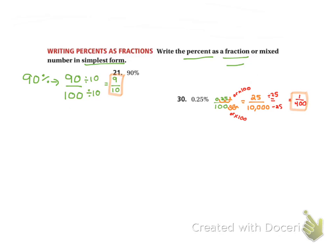And that is our simplest form there. So remember, when we're changing from a percent to a fraction, you just have to put it over 100, and then make sure you get it into simplest form after that. That's it for questions 21 and 30. If you guys have any questions, make sure to email me.